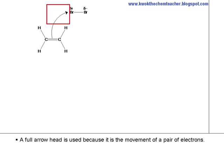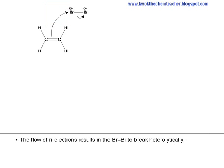A full arrowhead is used because it is the movement of a pair of electrons. The flow of pi electrons results in the Br-Br bond to break heterolytically.